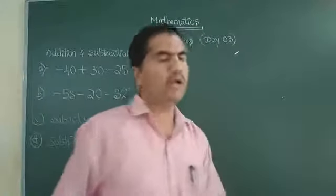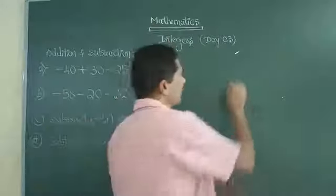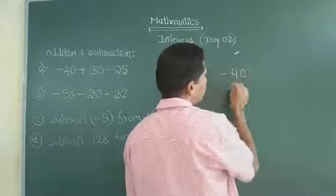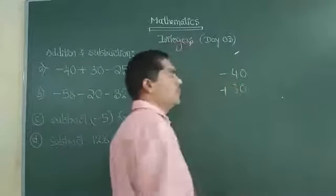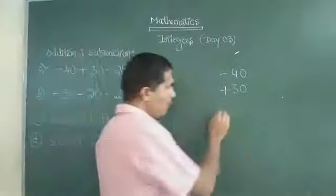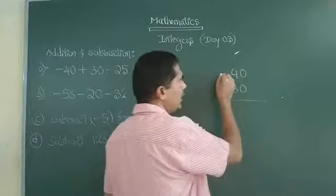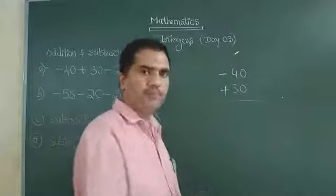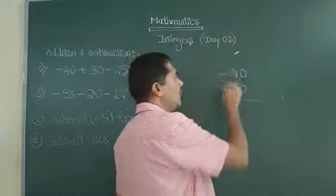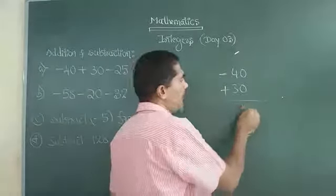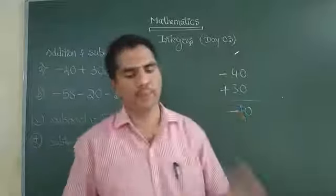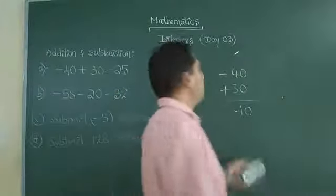But whenever two numbers have different sign, minus 40 plus 30, even though I say add plus 30 to minus 40, signs are different. Subtract, put the sign as the bigger number. So this much only you are supposed to keep there.